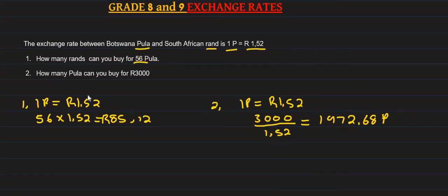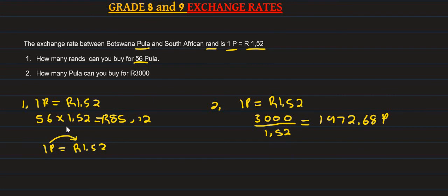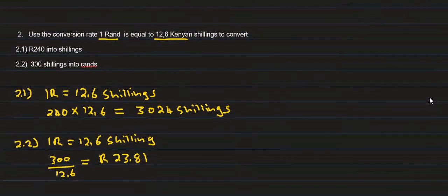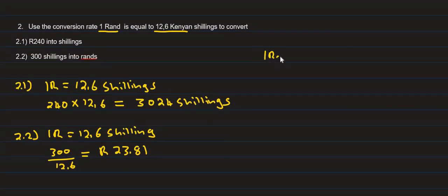We are multiplying Rand to Pula. We multiply when converting one way, and we divide when converting the other way. For example, converting Rand to Shillings: 1 Rand equals 12.6 Shillings, so we multiply to get Shillings.